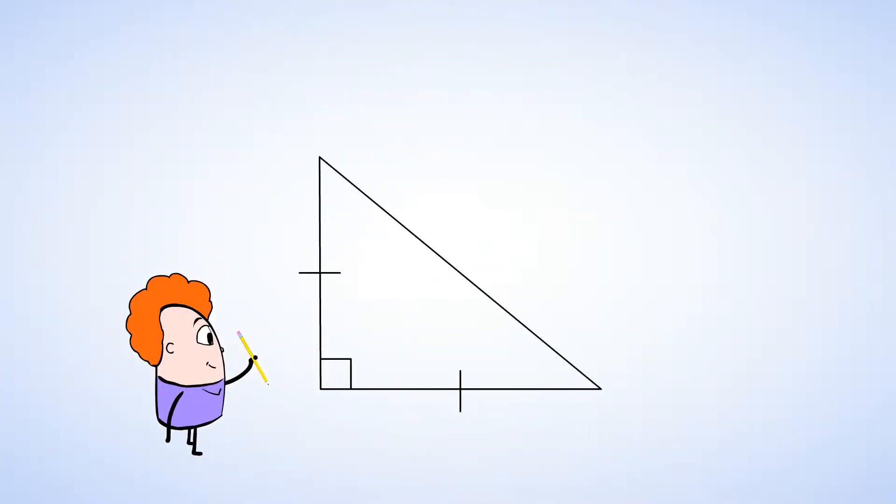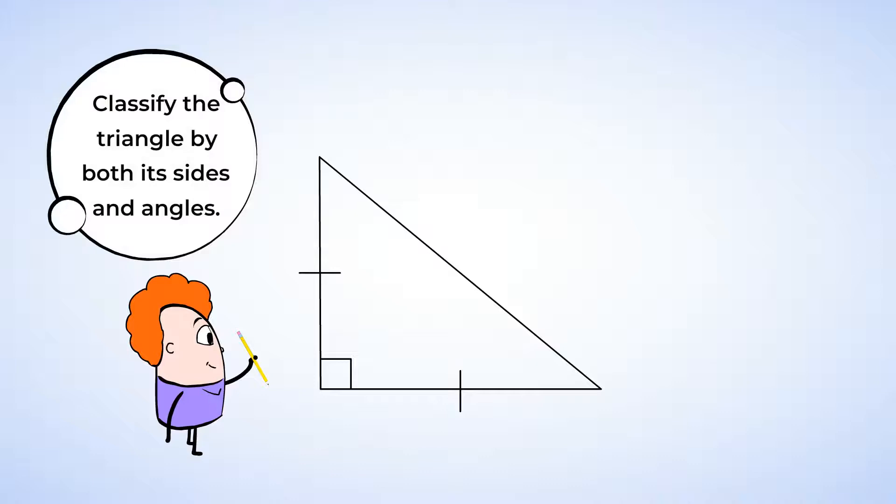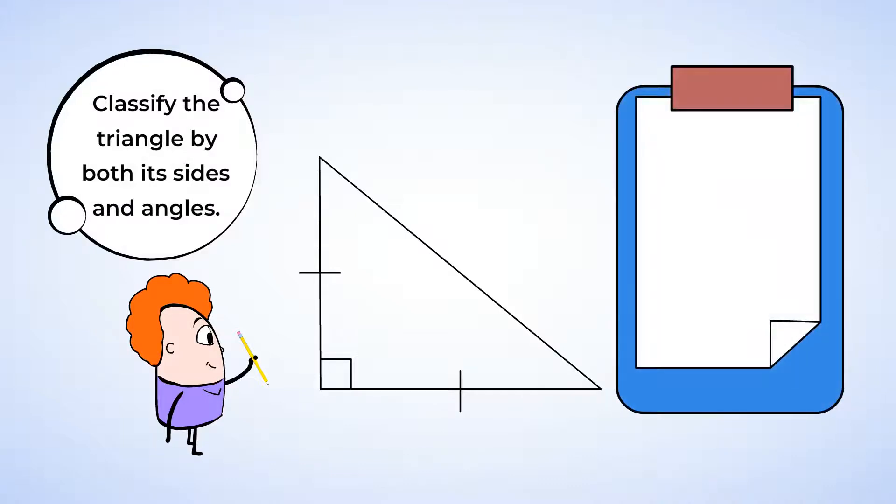Eric drew this triangle. Let's classify it both by its sides and angles. I don't see any numbers to help classify the triangle by side length or angle measure, but I do see some marks on the diagram that may help us. We're going to start by classifying the triangle by the side lengths. I see tick marks on two of the sides, which means that they're the same length. We know that this triangle is an isosceles triangle.